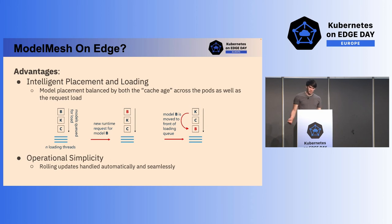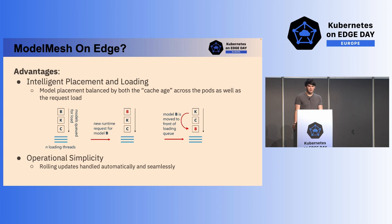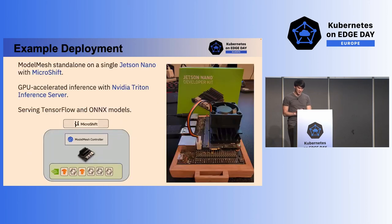Regarding day-two operations, a key aspect is the operational simplicity of ModelMesh. It supports rolling updates automatically. If you deploy a new model, the old version continues to receive all traffic until the new model is loaded into memory and ready for inference, at which point traffic is shifted. This all sounds great, so I wanted to try ModelMesh on edge — and that's what I did.